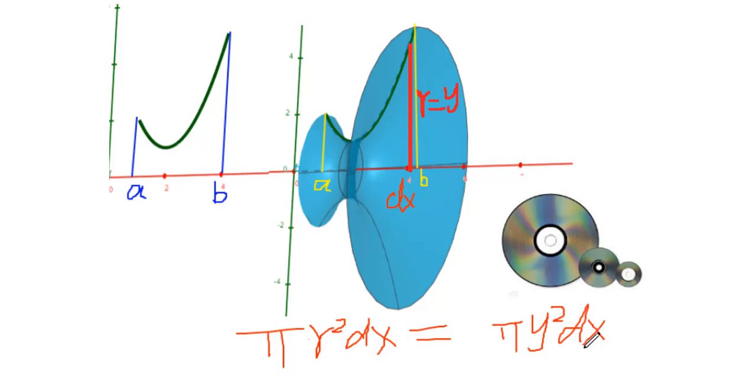This is only one disk. Because this solid is filled with millions of disks, we can use the integral. It will be from a to b.